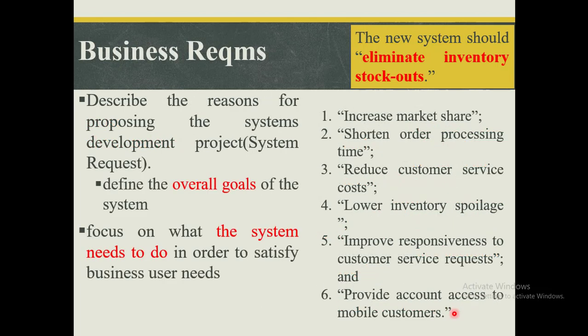We begin with the first one — business requirements. The business requirement describes the reason for proposing that system development project, and it comes from the system request. The business requirement defines the overall goals of this particular system and focuses on what the system ought to do to satisfy the business user needs.